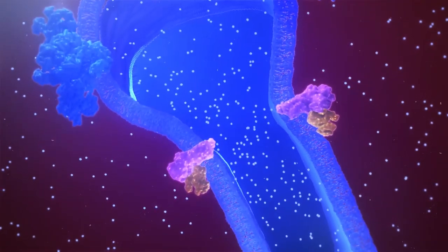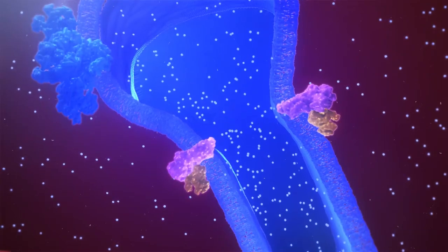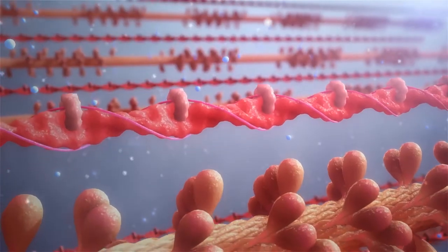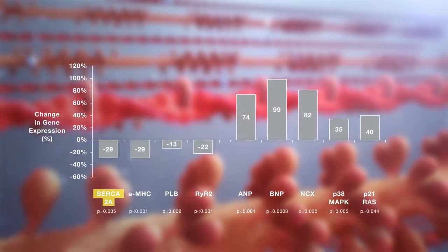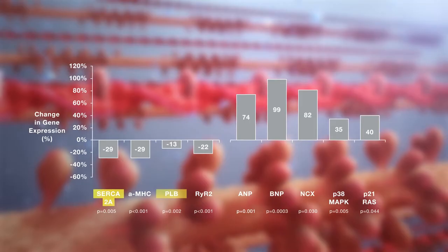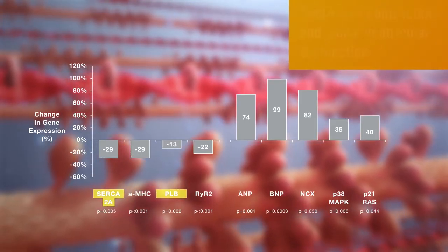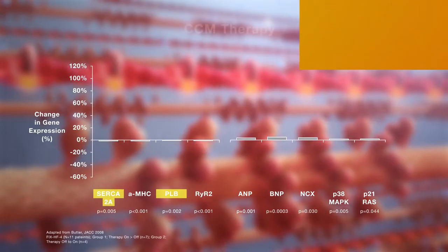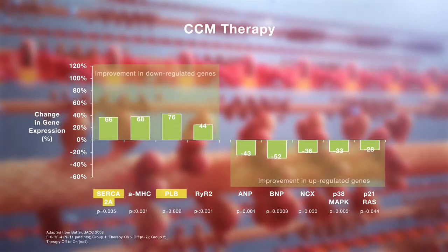Genotypic shifts in expression for proteins such as SERCA2a, alpha-myosin heavy chain, and phospholamban contribute to decreased contractility and global ventricular dysfunction in heart failure. CCM therapy has been associated with reversion of key gene expression back towards normal profiles, which collectively improve myocardial and global LV function.